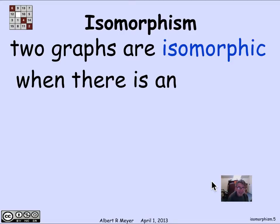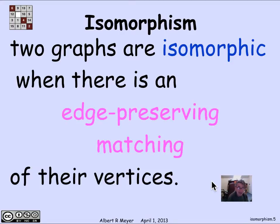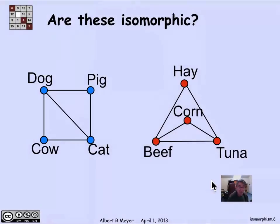To say it more precisely: two graphs are isomorphic when there's an edge-preserving matching between their vertices. Matching meaning a bijection between their vertices. And edge-preserving means that where there's an edge on one side, there's an edge between the corresponding vertices on the other side. Let's look at an example.